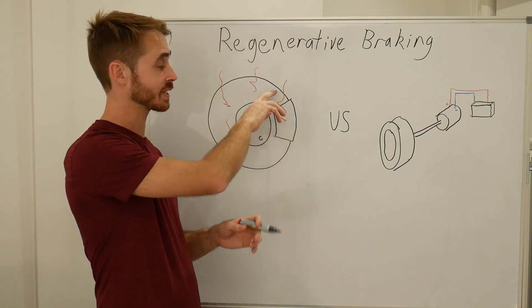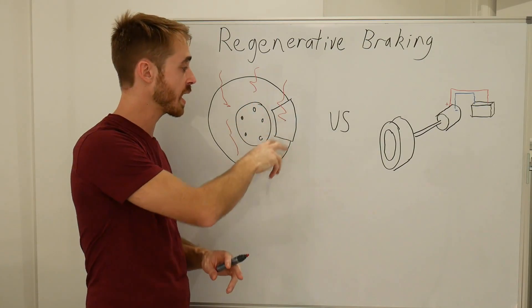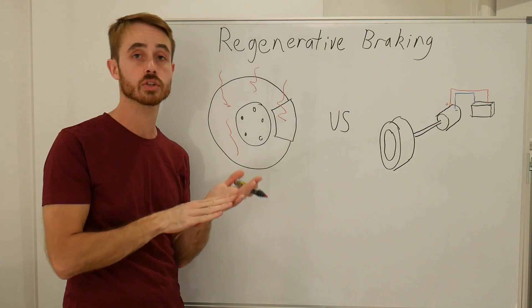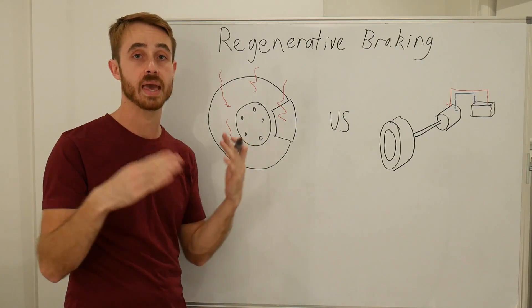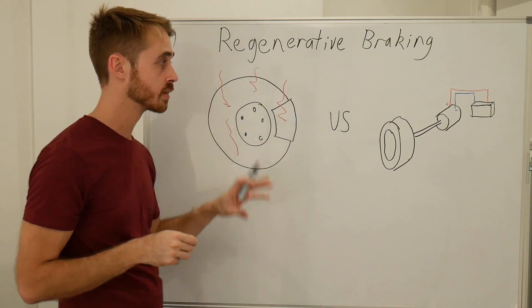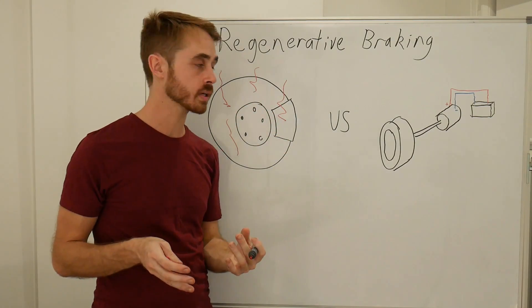And this is also causing number three, which is the wear on the pads. We get increased wear on the pads because we've got a friction surface which has to wear in order to generate that heat. So we can see that conventional braking isn't the best. So how does regenerative braking compare?